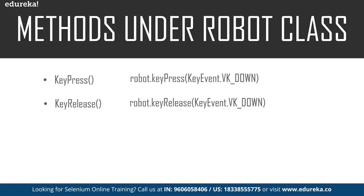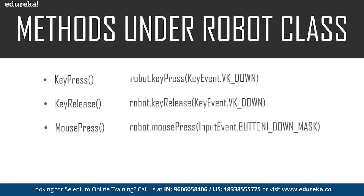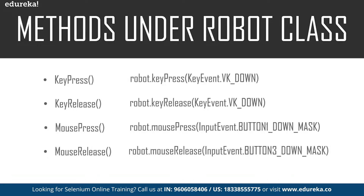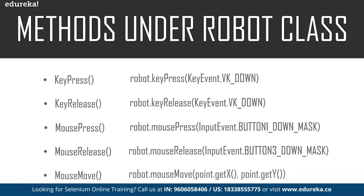Now let's take a look at the methods used to handle the mouse functions. We have the mouse press method, which is used to press the left button of the mouse. Then we have the mouse release method, which is used to release the pressed button of the mouse. Last up, we have the mouse move method, which will move the mouse pointer to the X and Y coordinates of the element — the command goes something like robot.mouseMove and you specify the coordinates of the X axis and the Y axis.